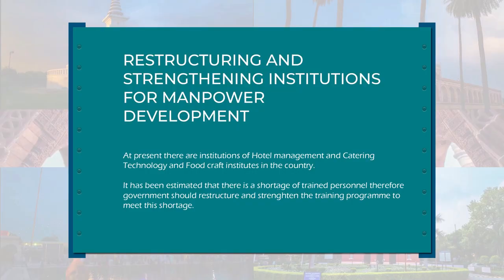Regarding restructuring and strengthening institutions for manpower development, at present there are 15 institutions of hotel management and catering technology and 16 food craft institutes in the country. It has been estimated that there is a shortage of trained personnel, so the government would restructure and strengthen the training program to meet the shortfall. There is an urgent need to supplement activities with specialized institutes like chef training institutes and national culinary institutes.